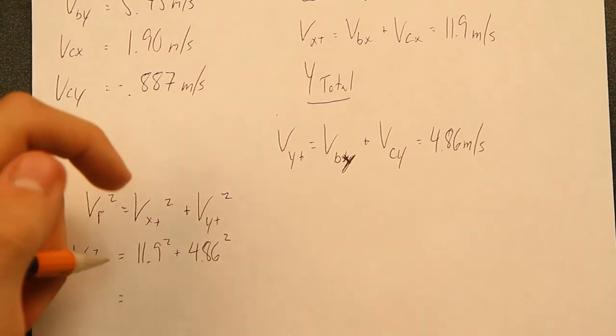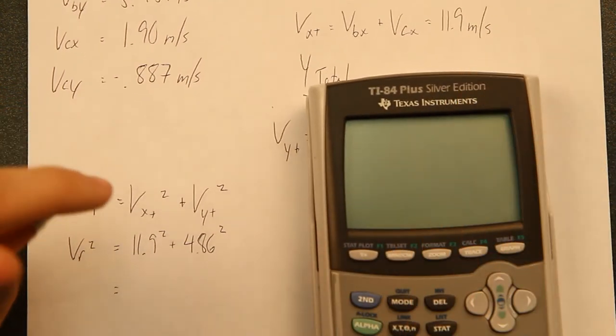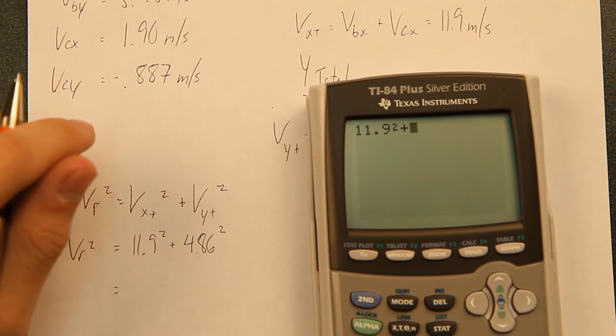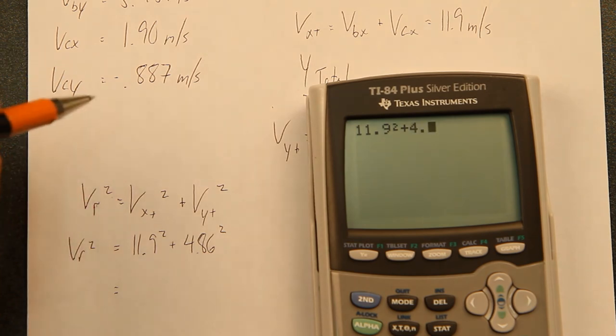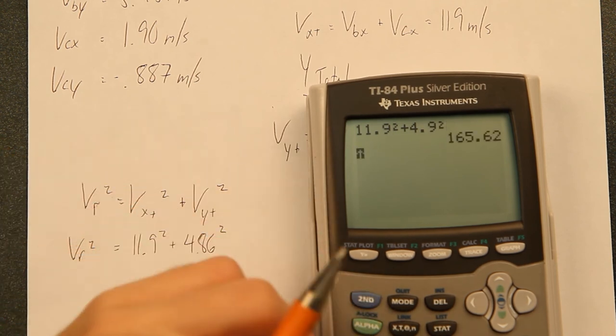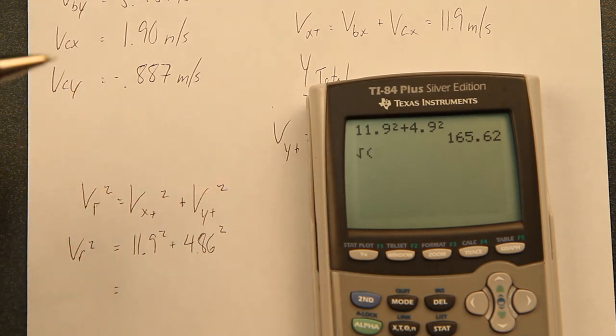We're going to have 11.9 squared plus 4.86 squared. If you go ahead and do that, I get 11.9 squared plus, that's going to round to 4.9 actually, squared. Then we're going to take the square root of this, 165.62.